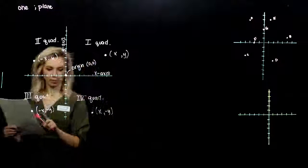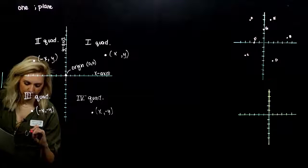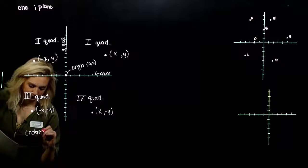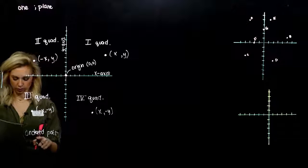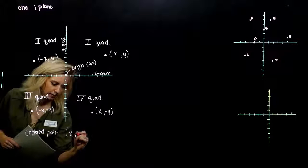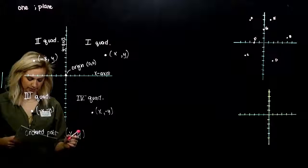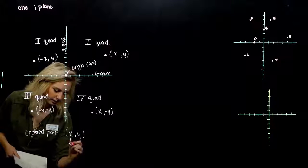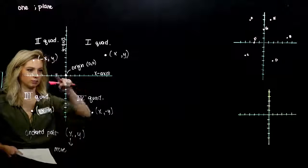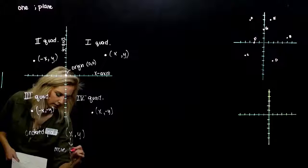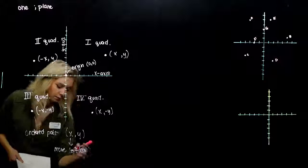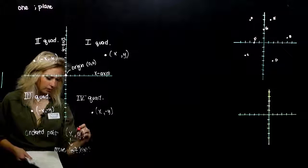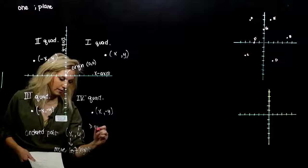As we're looking at an ordered pairing here, just a reminder, any point x and y is called an ordered pair. The x comes first, the y comes second. The x allows us to move left and right, and that's what happens first. Then, from that point, we move according to y, up and down.